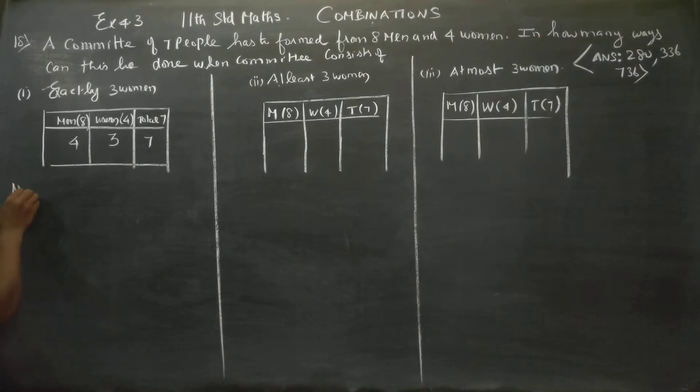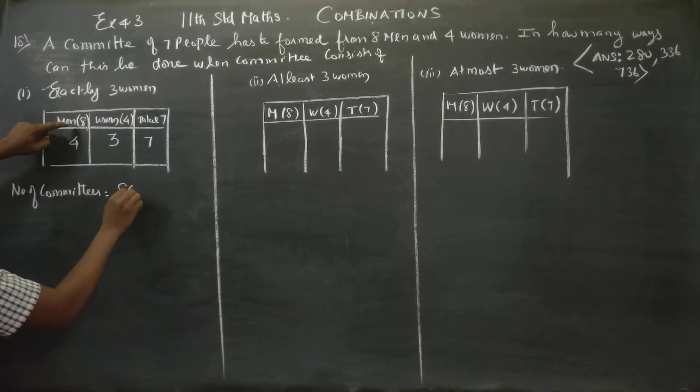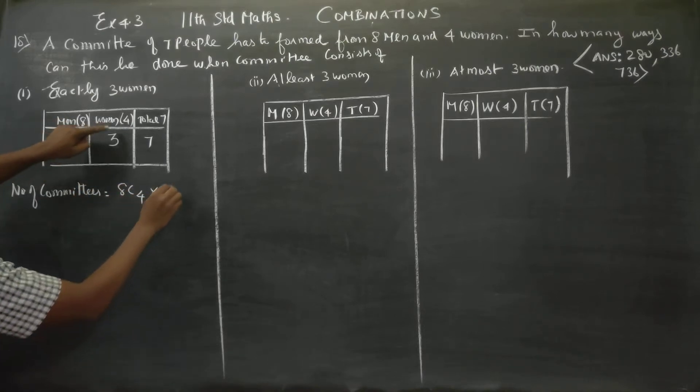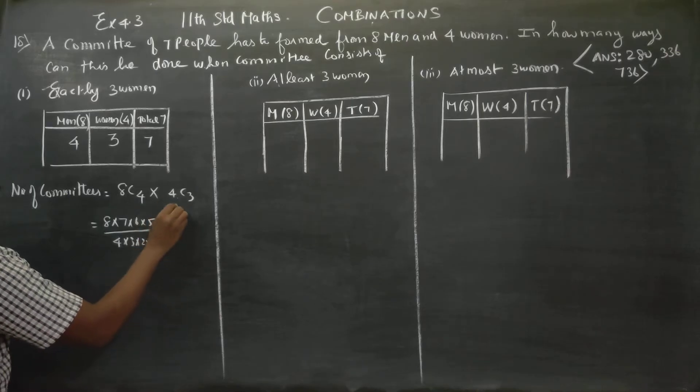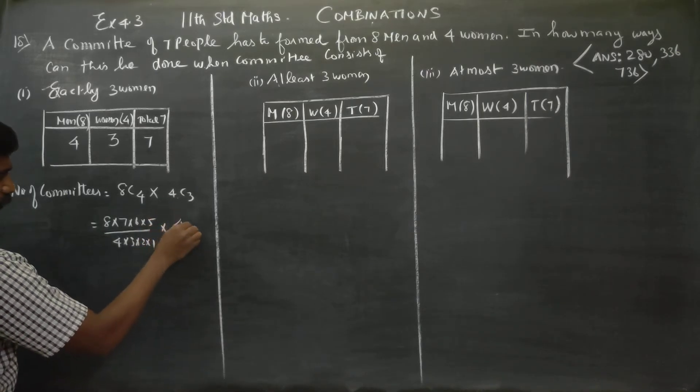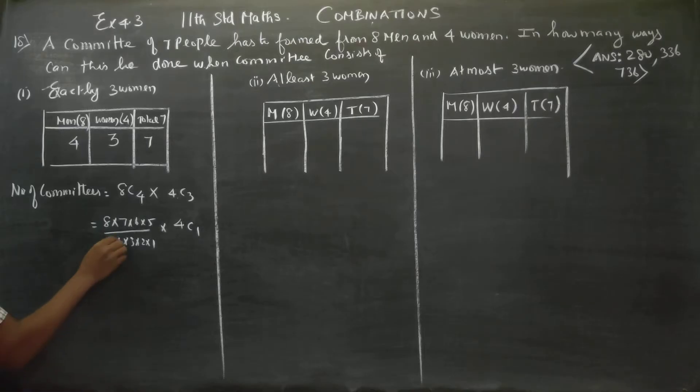The number of committees equals 8C4 times 4C3. 8C4 can be written as 8 times 7 times 6 times 5 divided by 4 times 3 times 2 times 1. And 4C3 can be written as 4C1. If you cancel, you get four twos are eight, then three cancels, five twos are ten.